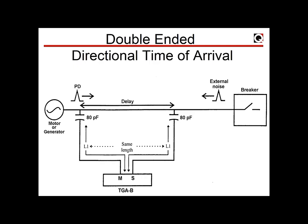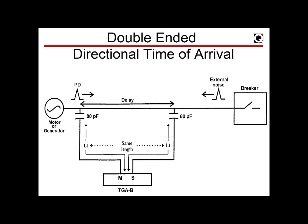In the IRIS approach, two sensors are recommended per phase. For turbo generators or large motors connected to bus conductors, two sensors are installed on the bus — one machine-side and one system-side. These compare pulse arrival time so the operator easily sees what is happening in the machine versus the system. The most critical aspect of any PD measurement is rejection of external noise, and the two-sensor method achieves this by comparing arrival times of pulses from the system and from the machine, separating them into two columns automatically.